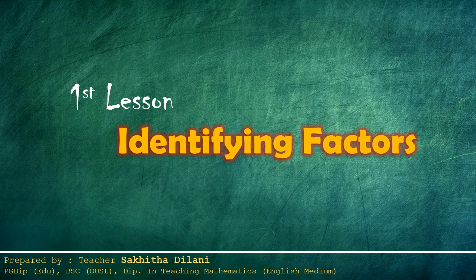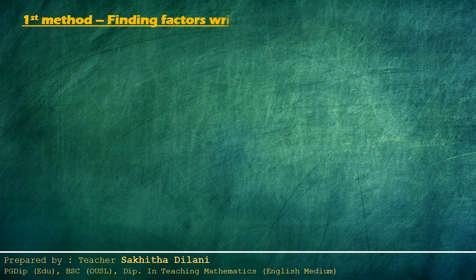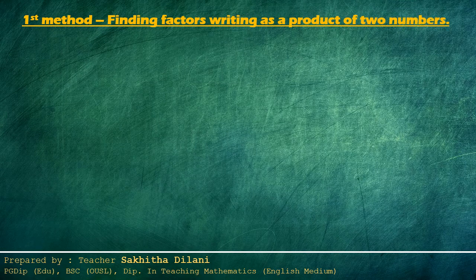There are three methods of finding factors. The first method is finding factors by writing a number as a product of two numbers. In this method, you will learn what a factor is.